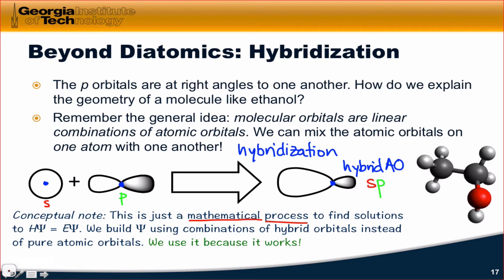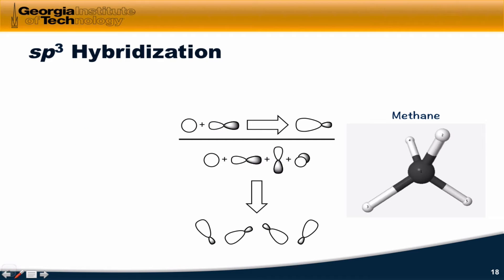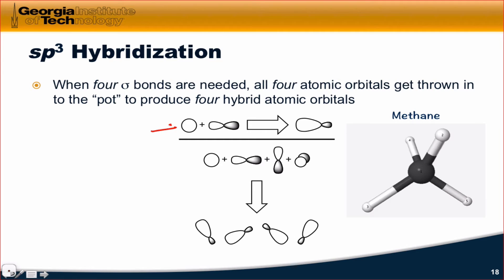What we can say about hybridization is that the number of bonds at an atom dictates its hybridization. For example, this carbon I'm highlighting in red has four bonds, and therefore we can immediately conclude that its hybridization must be SP3. It needs four hybrids to bond to the four atoms it's bonded to, so we throw four atomic orbitals into the mix — one S and three P's. A typical example of SP3 hybridization is methane, which has four bonds coming from the central carbon atom — four bonds to hydrogens.